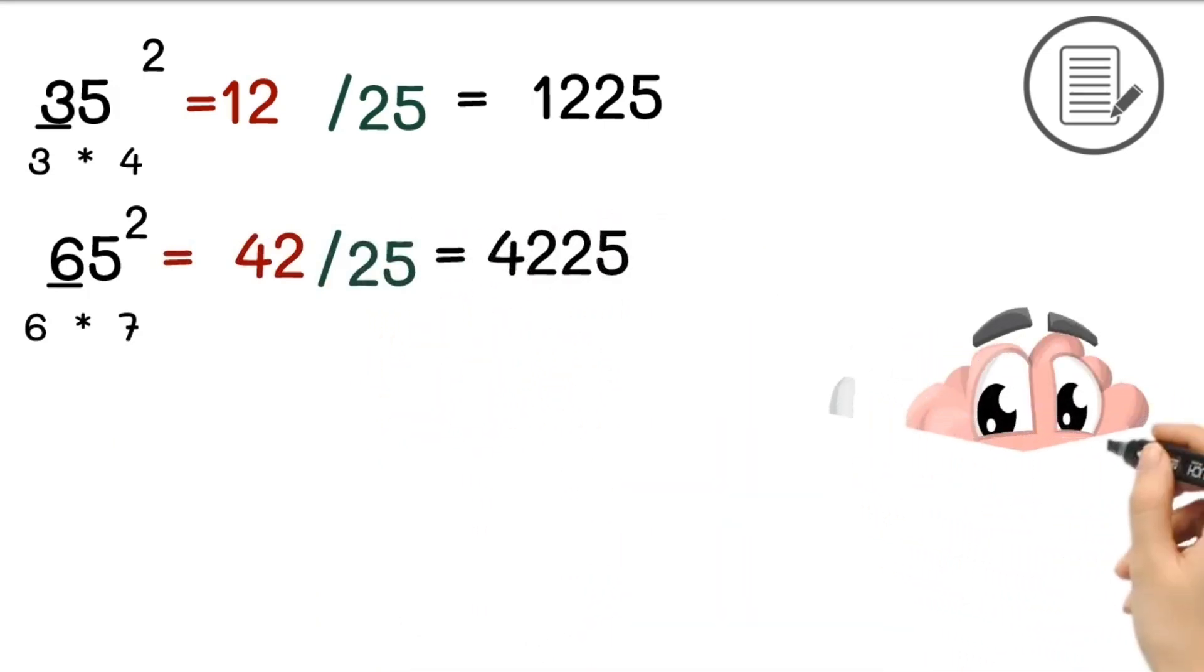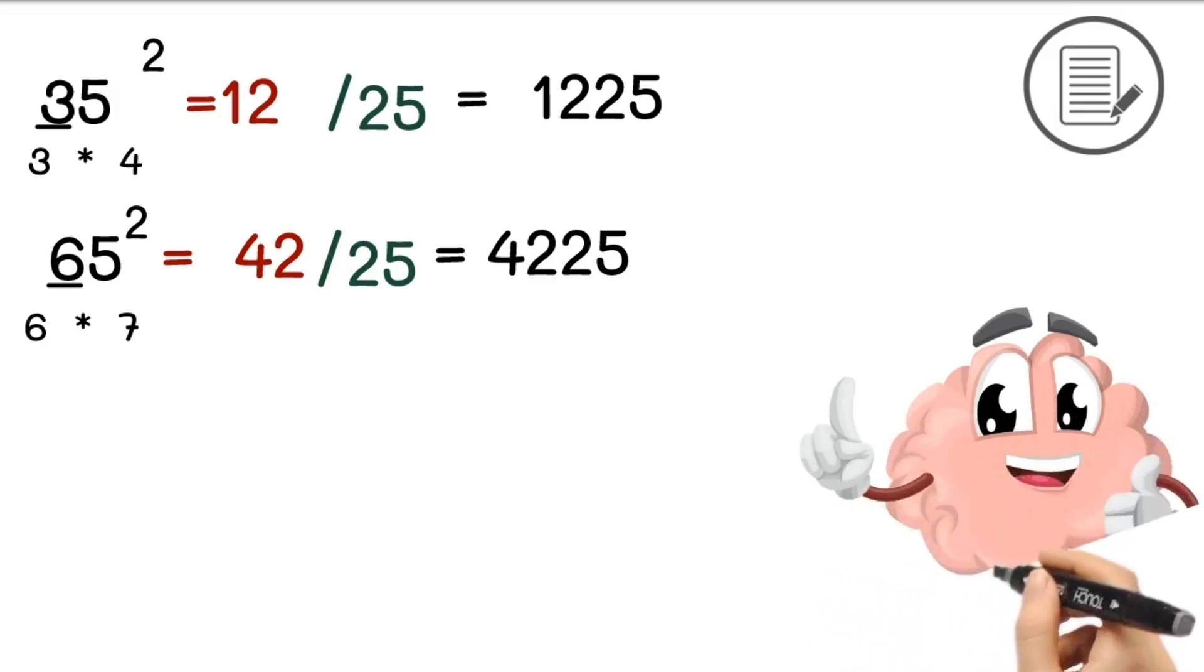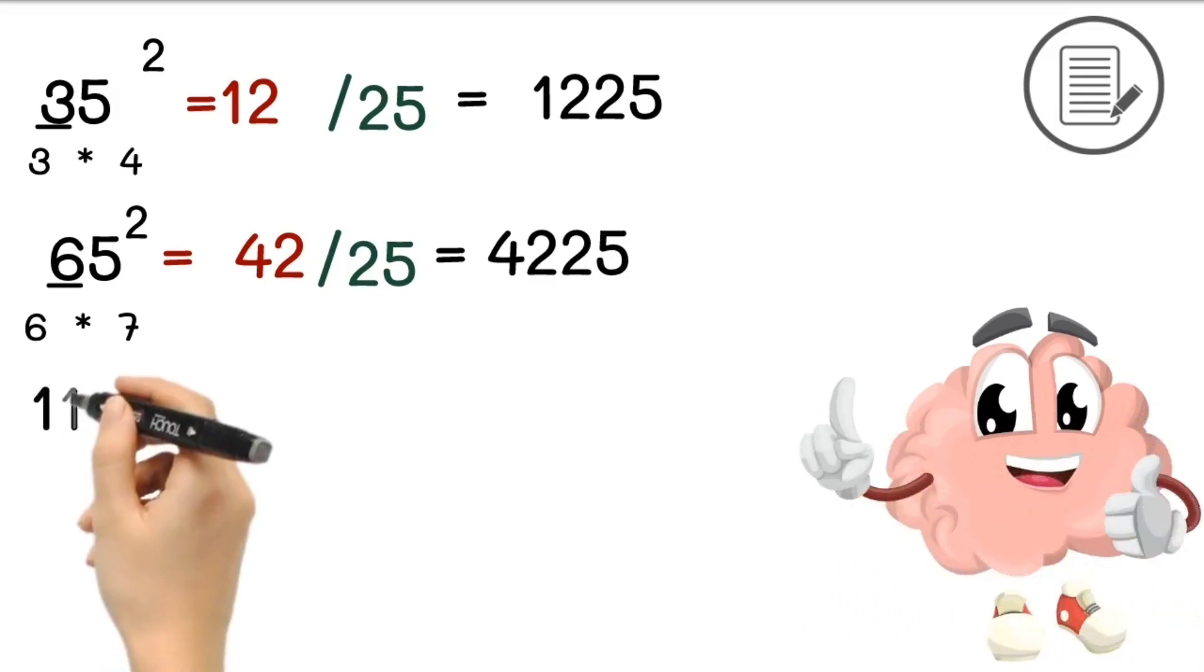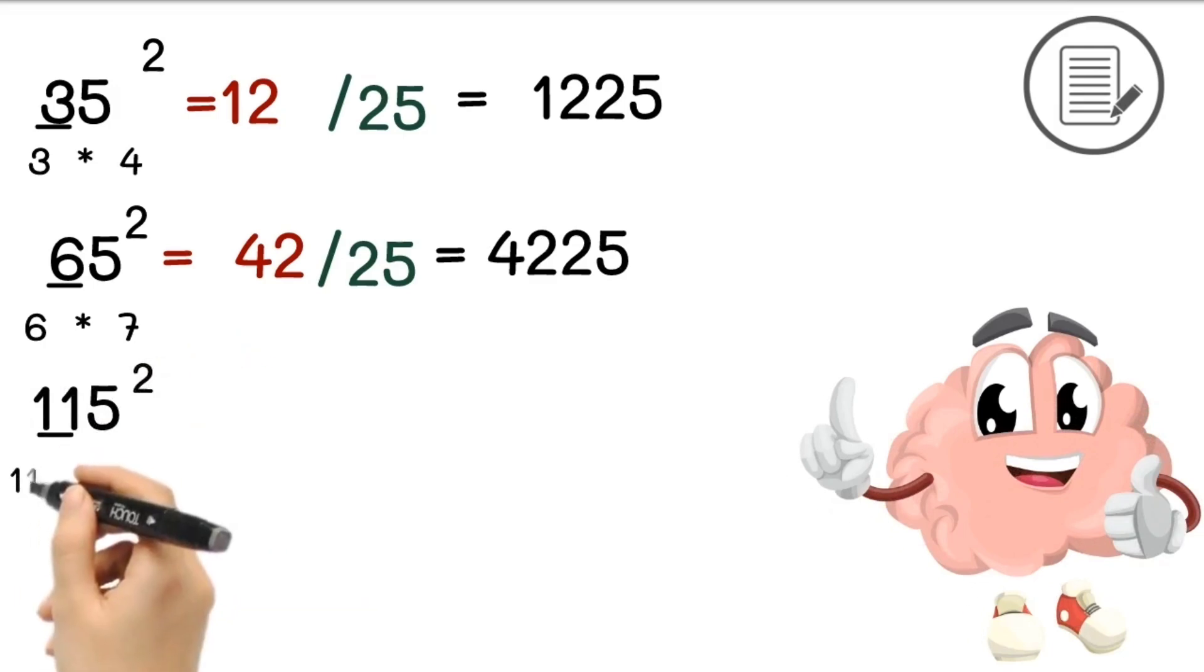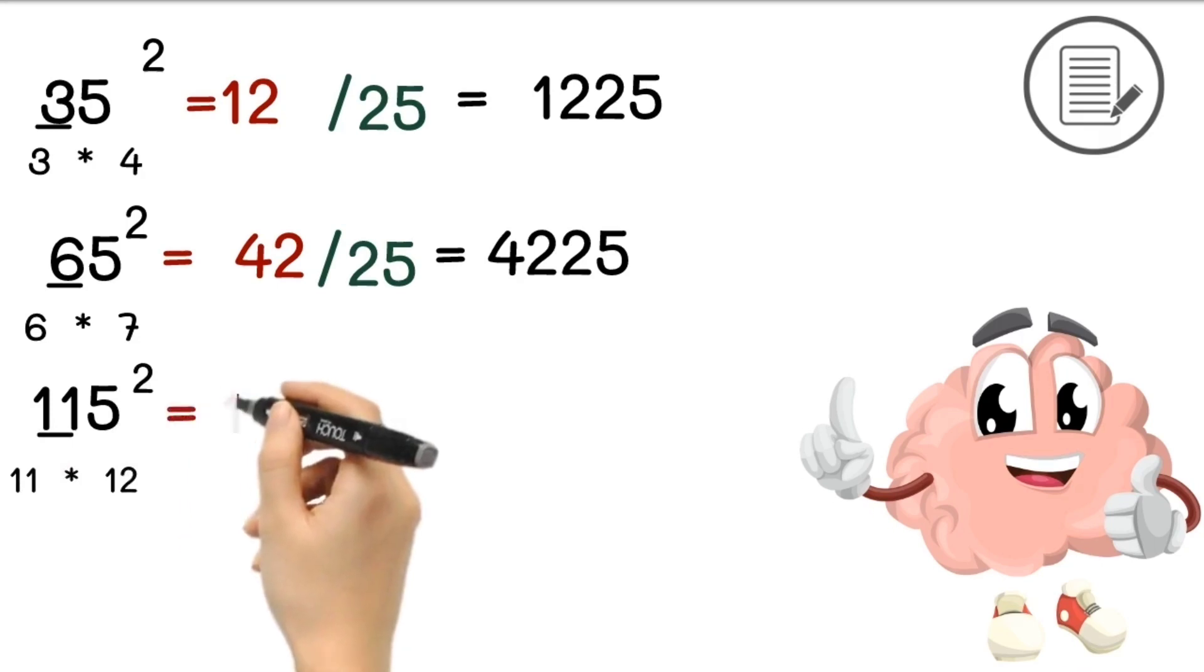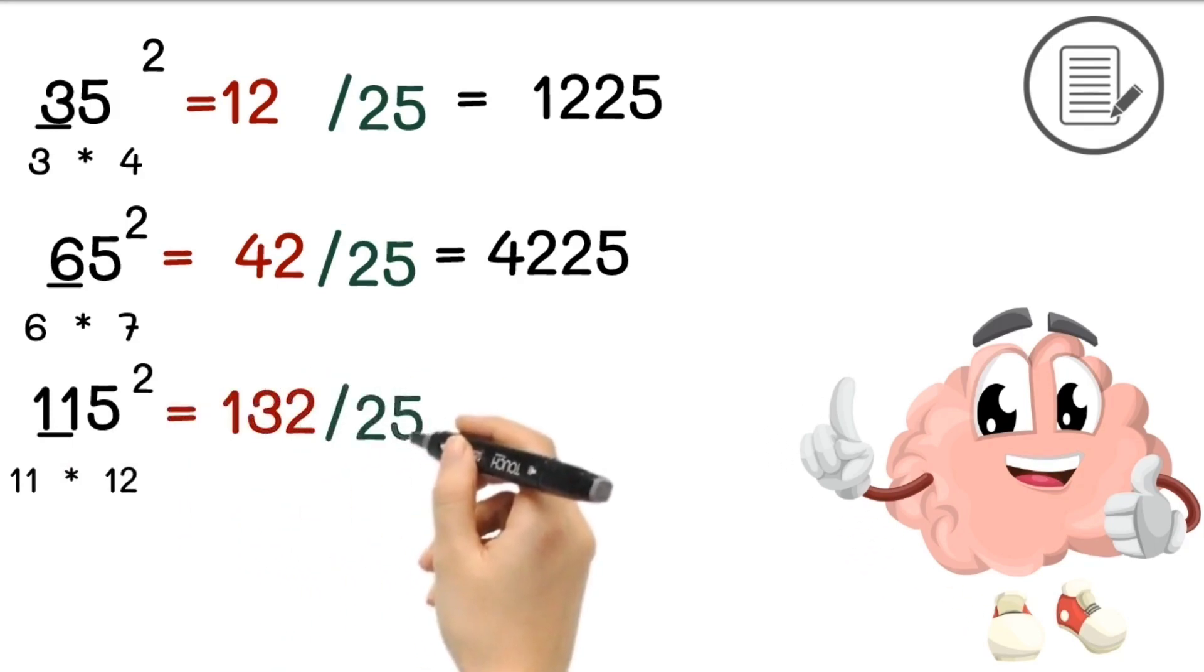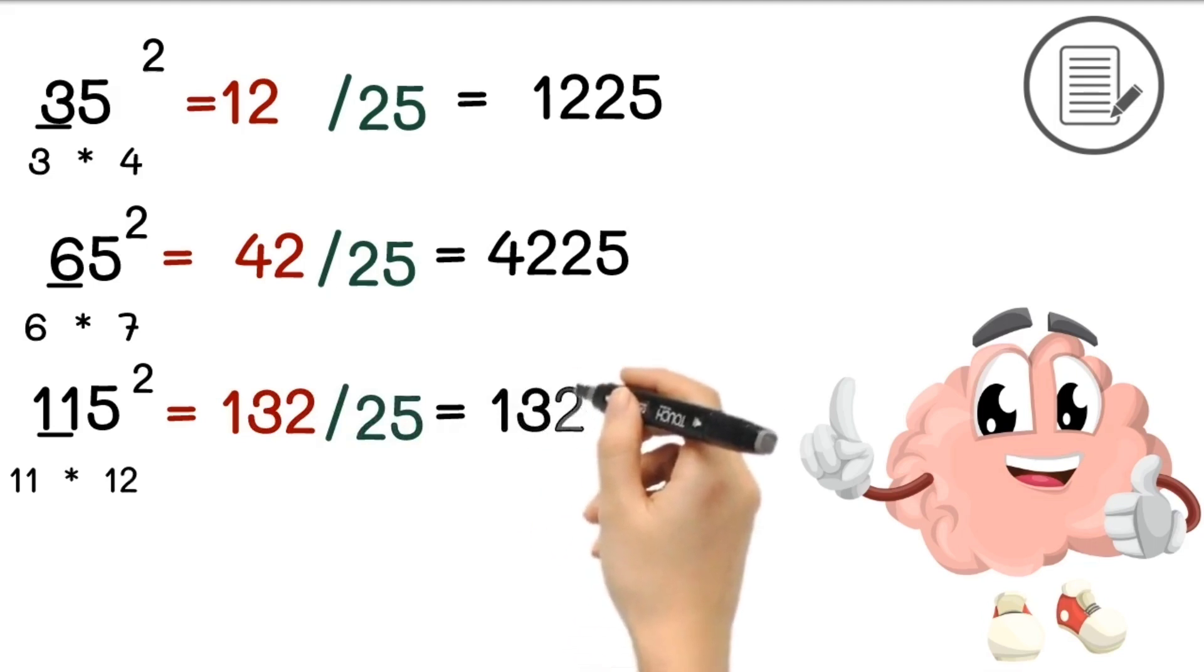This method also works with any big number square, just like 115. Here we need to take 11 and we will find out the next number of 11 which is 12. So 11 multiplied by 12 equals 132 and the next part is 25. So our answer will be 13,225.